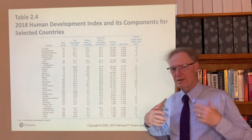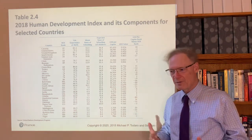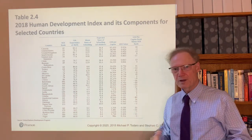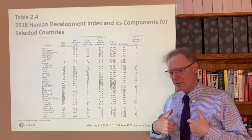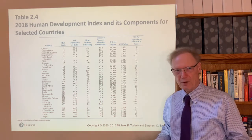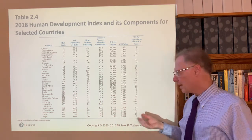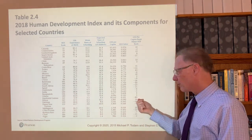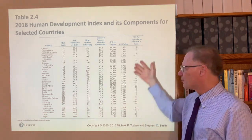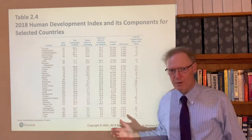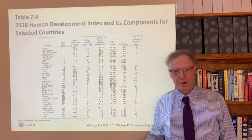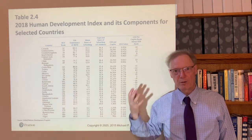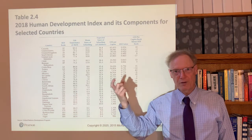In contrast, Equatorial Guinea is found 80 positions lower in the Human Development Index than in income per capita. It has a lot of national income from resource exports and is highly unequal.